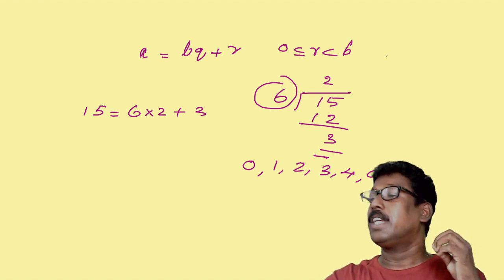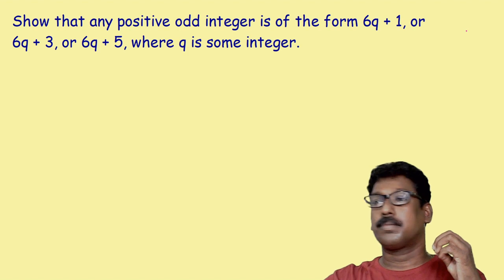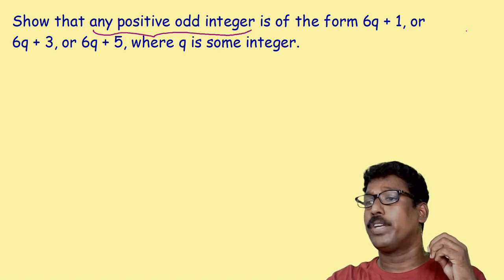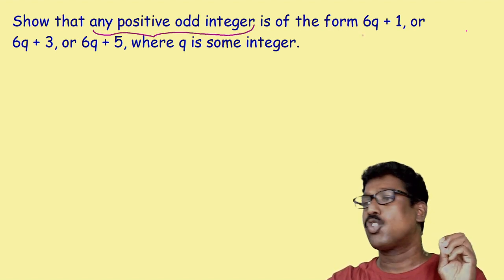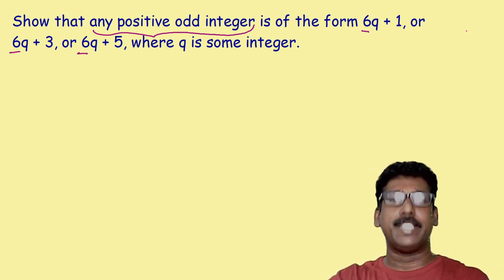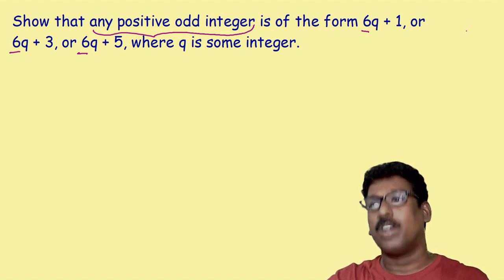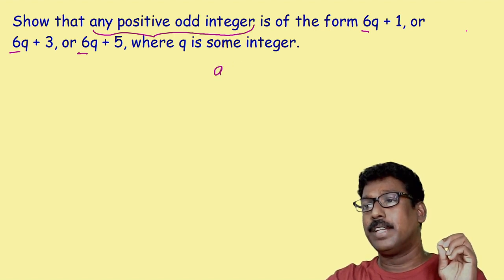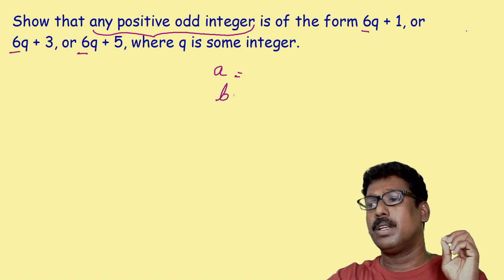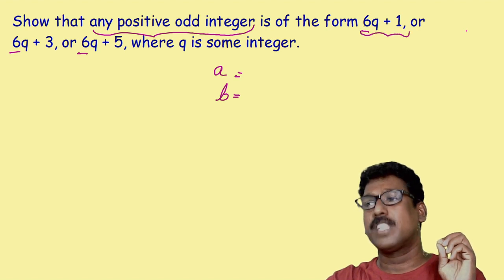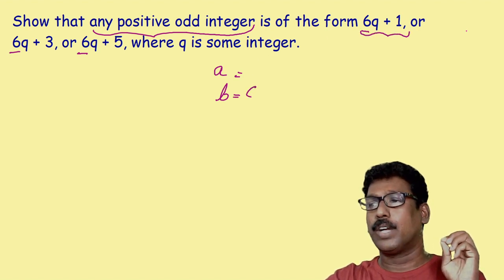Now let us look at the question. Here, you have to show that any positive odd integer is of the form 6q plus 1, or 6q plus 3, or 6q plus 5. This positive odd integer we can represent as a letter; since we don't know which integer it is, we can take it as a. What will be the possible value for b? Since in the question it is given in the form 6q plus 1, b here we can take as 6.